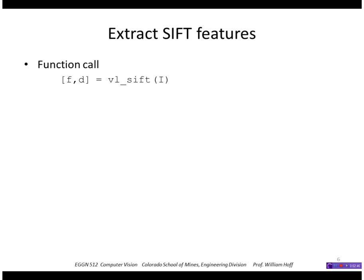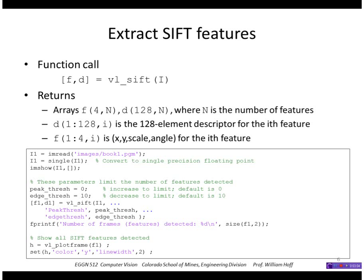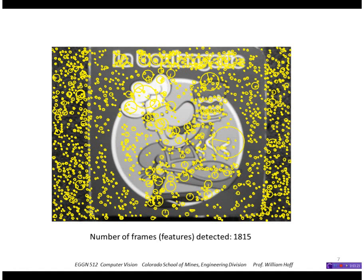The way I'll extract SIFT features is to call VLSIFT. This returns arrays F and D, where D is the actual descriptors — the 128-element descriptors — and F is a summary of the descriptors in terms of XY, scale, and angle. This is some MATLAB code to read one of those training images called book one. This shows the SIFT features extracted from that image — there are 1800 of them. Each yellow circle represents a feature, and the size of the circle is the scale of the feature. There's also an aligned segment indicating the orientation of the descriptor.